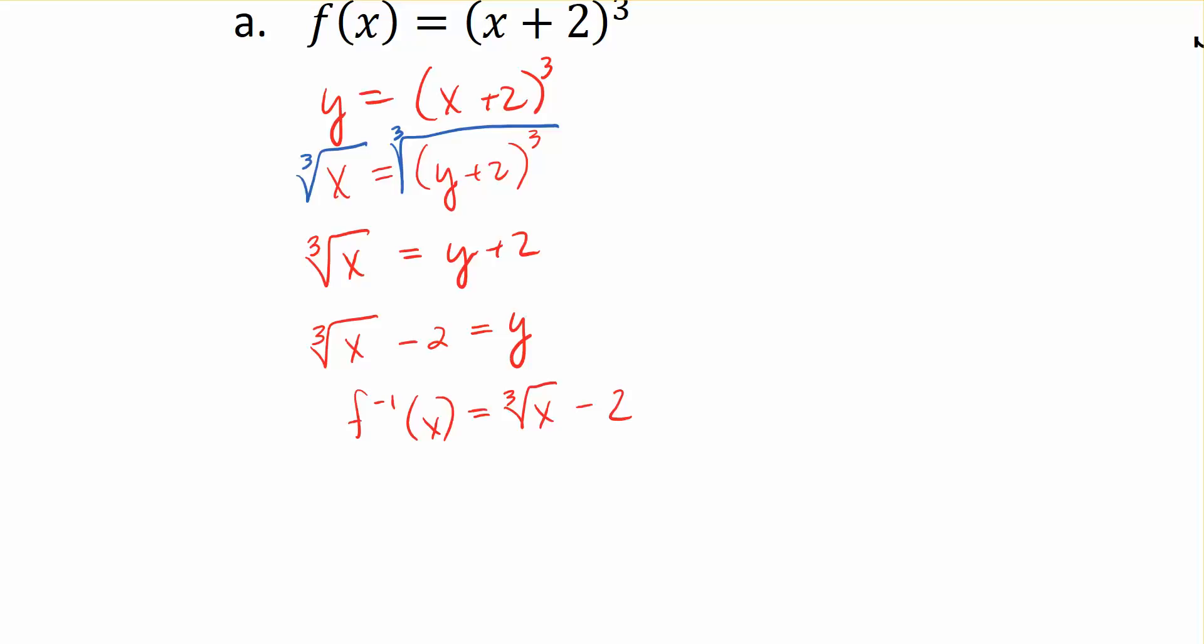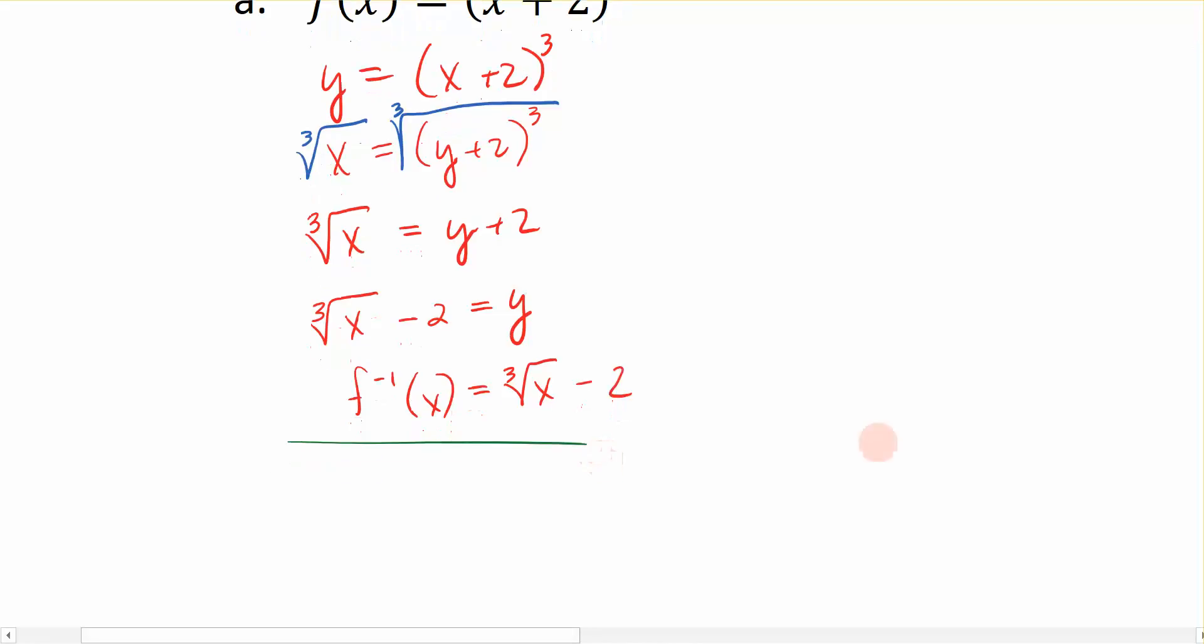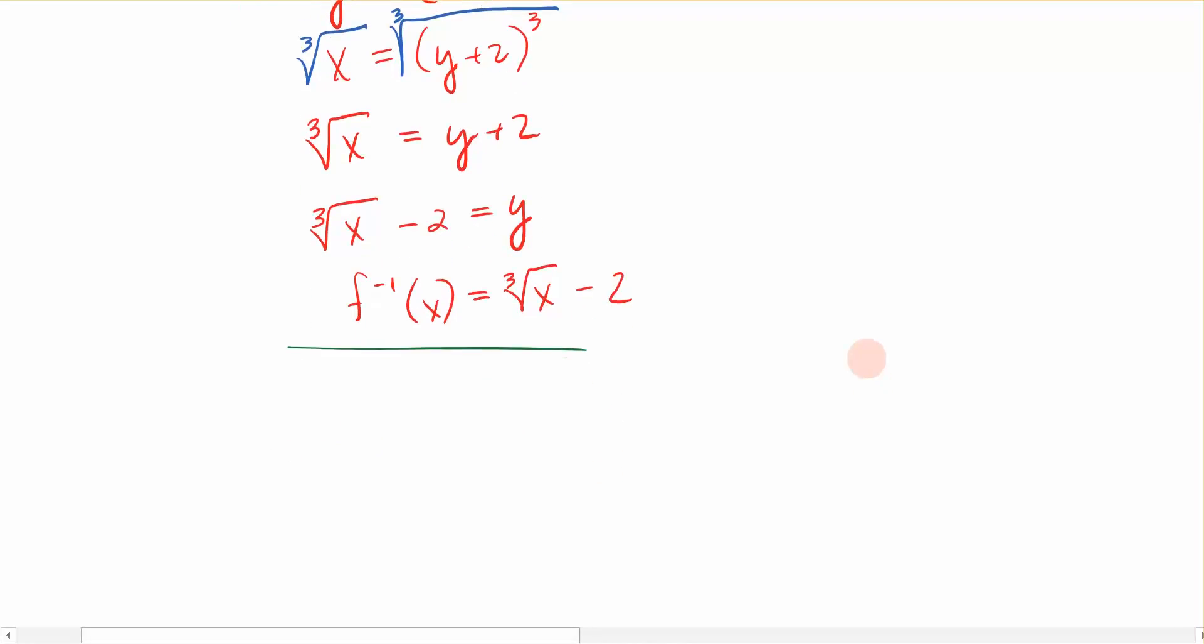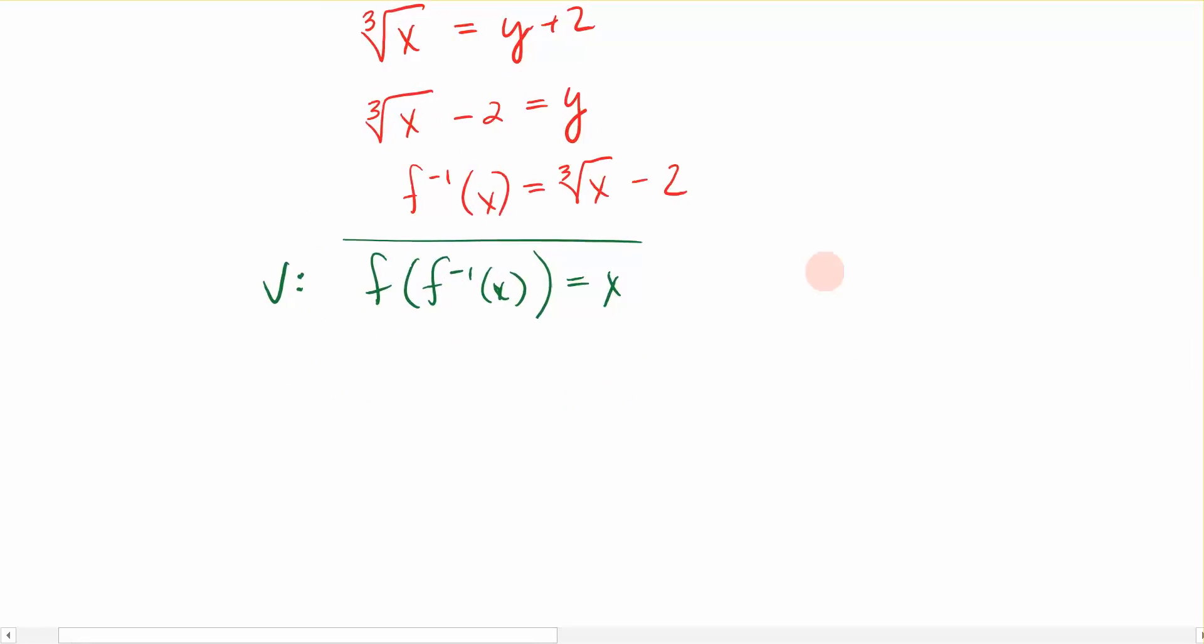To do that, we're going to use our characteristics or our definitions, I suppose, of an inverse function that says if I take a function, compose it with its inverse, I should get back the variable x. And we're going to just practice that just to make sure. Now remember, my inverse function was originally x plus 2 raised to the third power. So we're going to compose f with f inverse and see what we get.